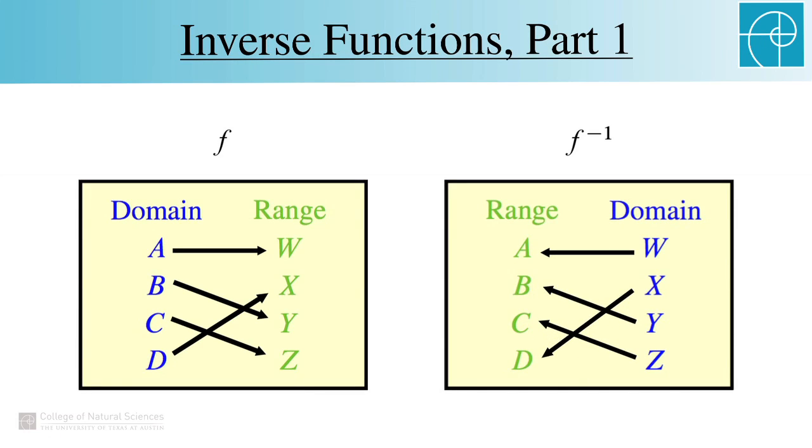We denote f inverse with an f and a negative 1 as a superscript. The original function mapped elements in the left column of letters to elements in the right column. So the inverse goes from the right column to the left column. This means that the domain and range have been interchanged. So the domain of f is the range of f inverse, and the range of f is the domain of f inverse.